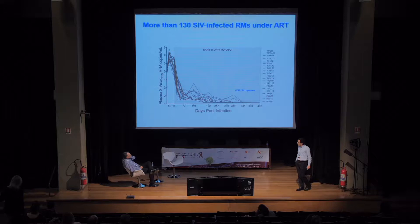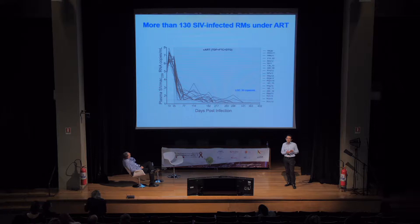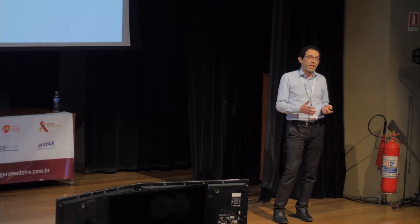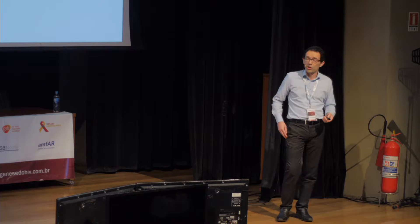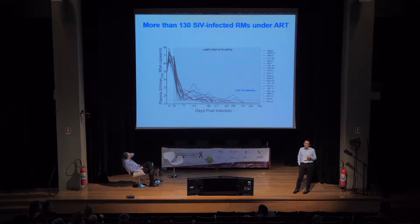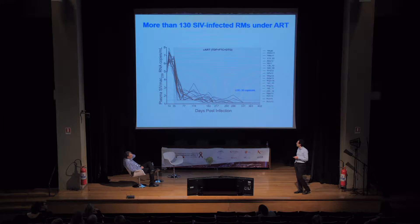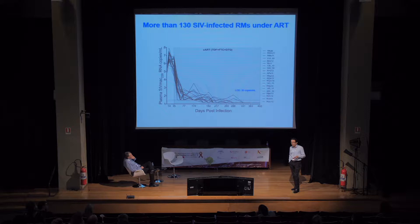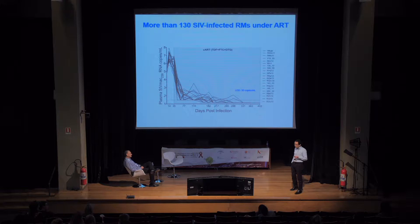One main problem in the monkey model for HIV cure research was that until several years ago we didn't have ART as effective as in humans. Studies from many labs, including ours and led by Jeff Lifson at NCI, optimized a very effective ART regimen — a combination of TDF, FTC, and DTG in a single injection formulation. In my lab we now have more than 100 animals on ART and regularly achieve viral suppression in 99% of animals, reaching undetectable levels if treated long enough.